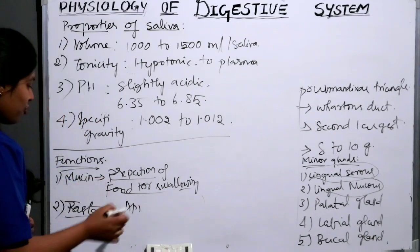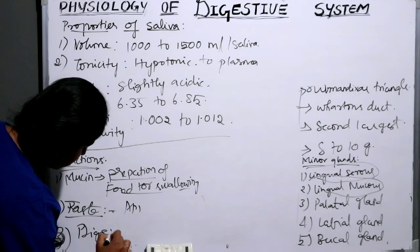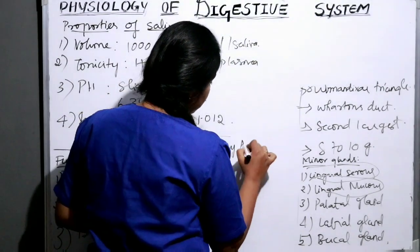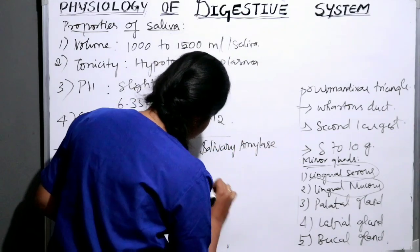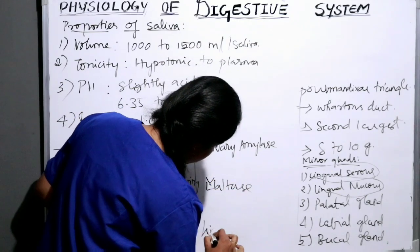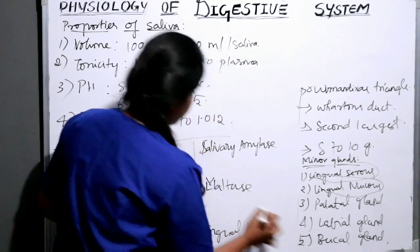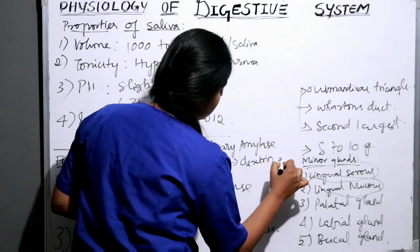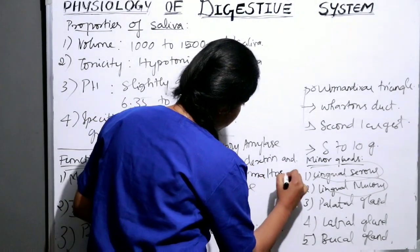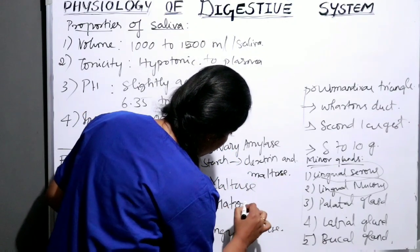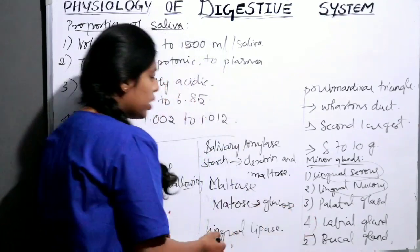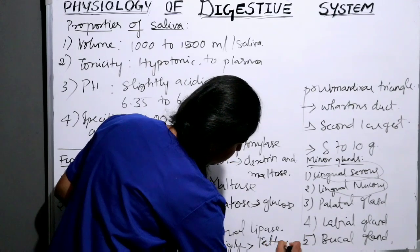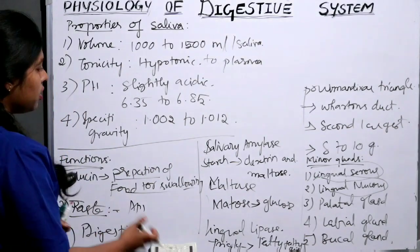Saliva also helps in digestion. It consists of three types of enzymes: salivary amylase, maltase, and lingual lipase. Salivary amylase converts starch into dextrin and maltose. Maltase converts maltose into glucose. Lingual lipase converts triglycerides into free fatty acids.